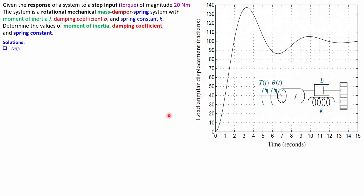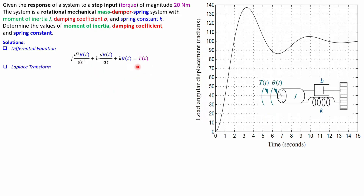First, set up the differential equation: J times the second derivative of theta, plus b times the first derivative of theta, plus k times theta equals the torque. That's Newton's second law for rotational mechanical systems. Moving from the time domain to the frequency domain: use s squared for the second derivative, s for the first derivative, and replace t with s. Then collect terms on the right-hand side.